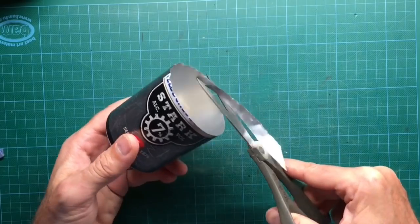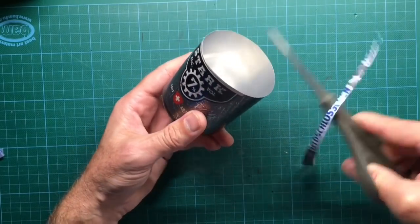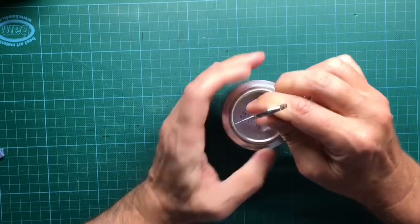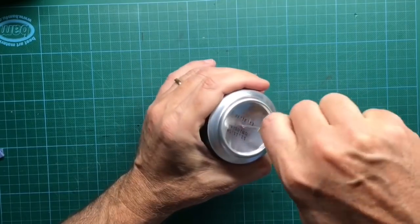Reduce a soda can to the half of its size. Punch a hole into the bottom part of the soda can with a scissor.